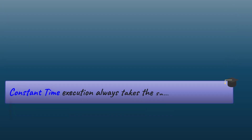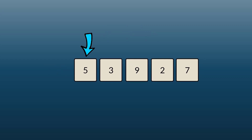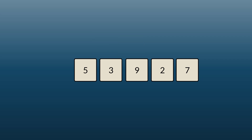Constant time algorithms always take the same number of steps. For example, adding two numbers always takes exactly one action — that's constant time. Similarly, checking just the first item in a list is always one operation. Even checking the first three items is constant, because no matter how big your list gets, you always check exactly three items.